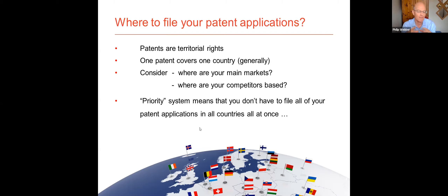Bearing in mind the rights the patent gives you — the right to stop people selling your invention — what countries do you want to stop your competitors doing that? America is always going to be a big market; Europe is likely to be a very big market as well. Those two probably cover 60–70% of your market. Secondly, you need to think where your competitors are likely to make your invention. Are there competitors in China or India that might make your invention in their manufacturing plants and then import it into your other markets? You might want to get Chinese and Indian patents to stop competitors manufacturing there.